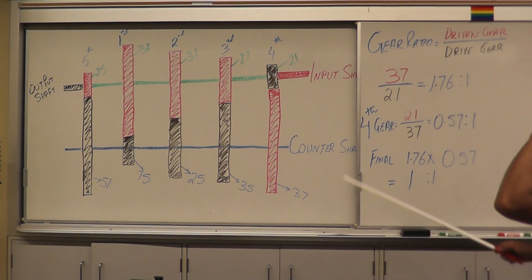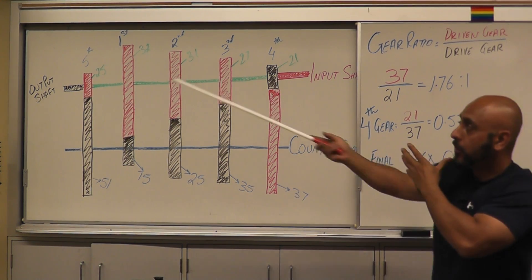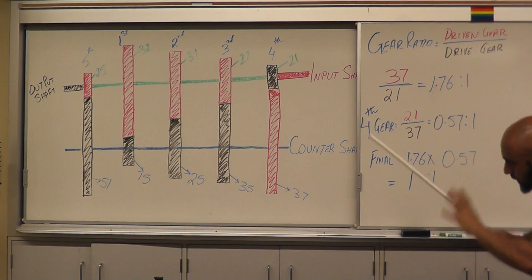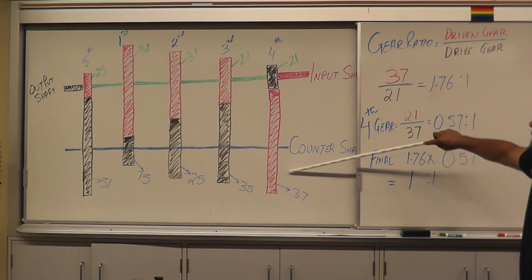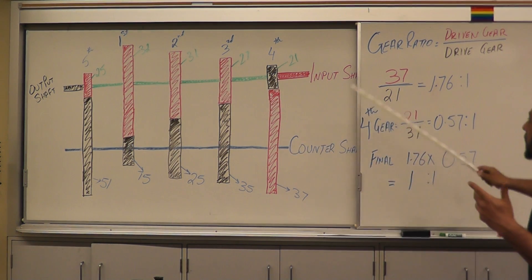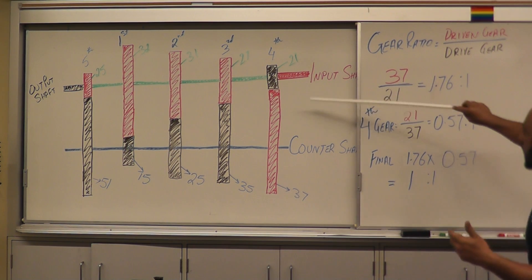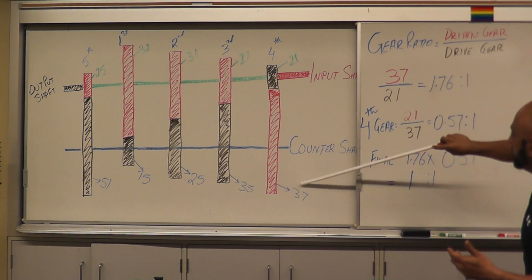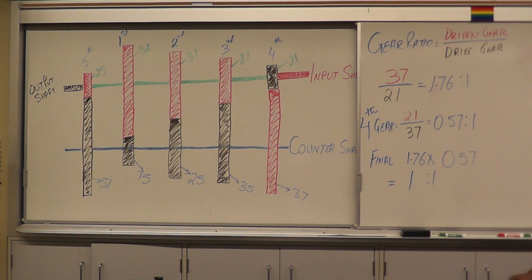In our fourth gear, the power just goes straight out — whatever RPMs your engine is spinning at, your output shaft spins at the same RPM. To verify: we have 37 and 21 giving 1.76, but if you flip it around — 21 over 37 — that gives you 0.57. Multiply both: 1.76 × 0.57 gives you approximately 1, so your ratio is 1 to 1.